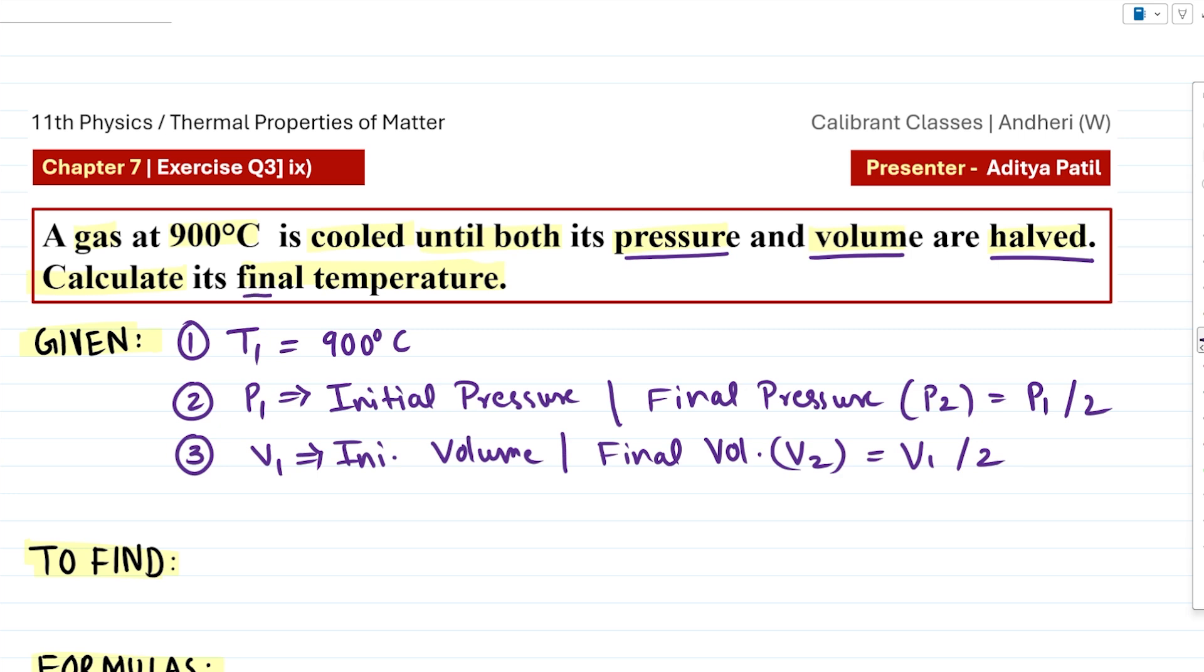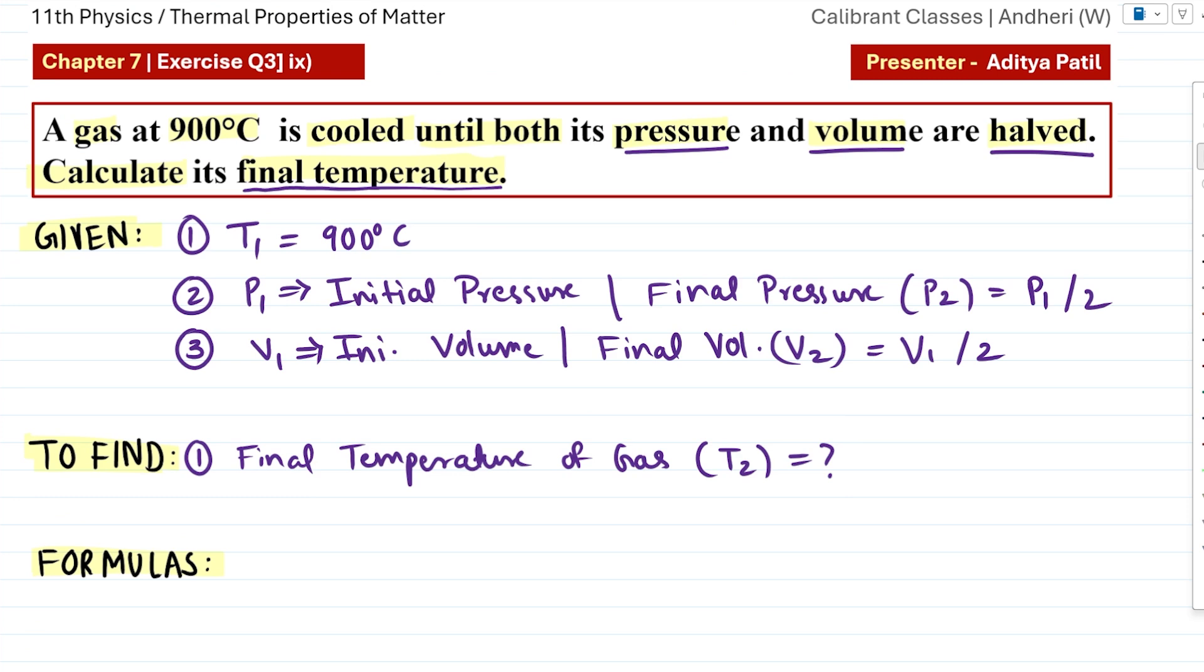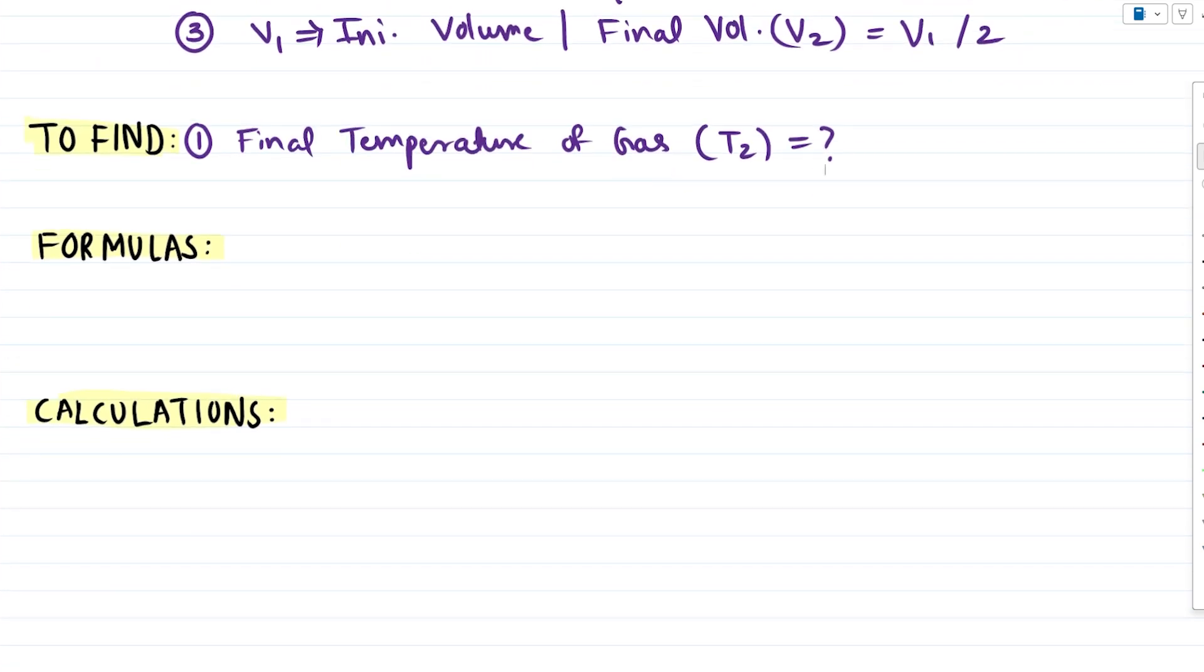This is the condition where the gas pressure and volume are halved, and at this point we have to find the final temperature of the gas. So in our 'to find' section, we write: find the final temperature of gas, which we represent with the symbol T2. T1, P1, V1, P2, and V2 are given in our question.